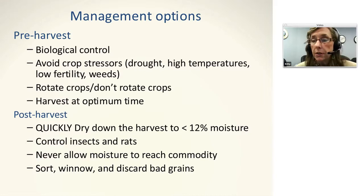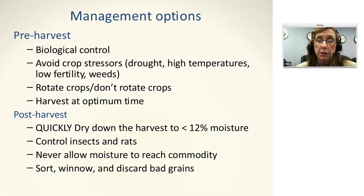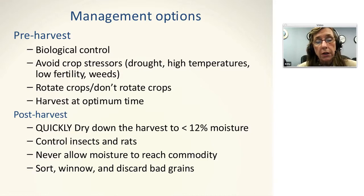Today we're going to talk about management options. Because we have pre-harvest conditions in which the fungus gets into the field, there are some intervention points before you harvest, and then there are intervention points after you harvest. One of the biggest ones is biological control — it blocks the toxic fungus from getting into the crop at all as a preemptive measure. Once you've used biological control successfully throughout the value chain, you cannot get toxin because the toxic fungus has been displaced.